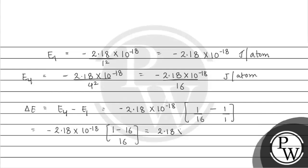This gives us 2.18 into 10 to the power minus 18 multiplied by 15 upon 16.